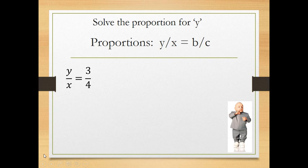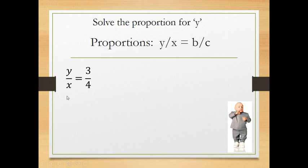Now let's solve a proportion for y where we have two variables. We're going to express the fraction y/x = 3/4. Because we have two variables, instead of getting a single answer, we're going to write an equation — isolate y, solving y in terms of x. Let's go ahead and do the same steps we did before.